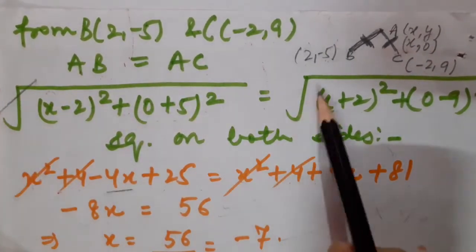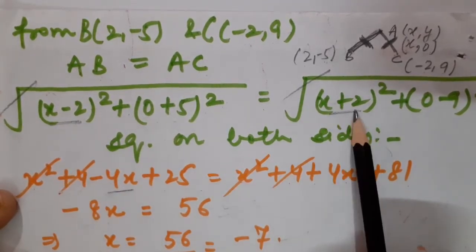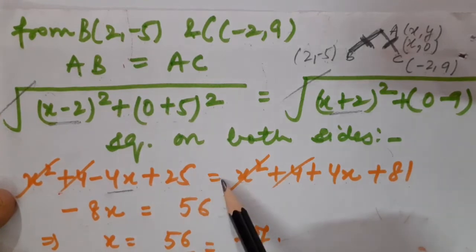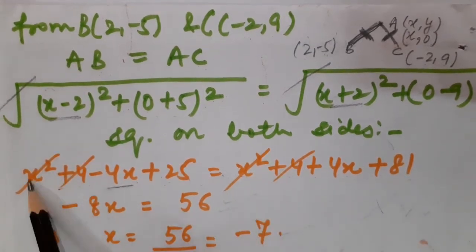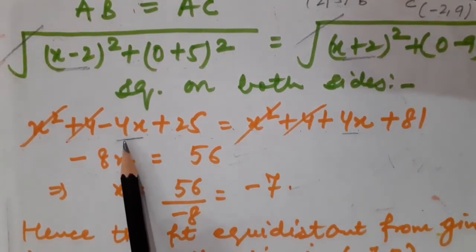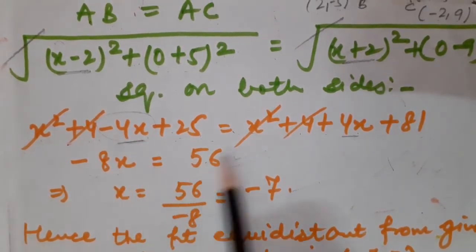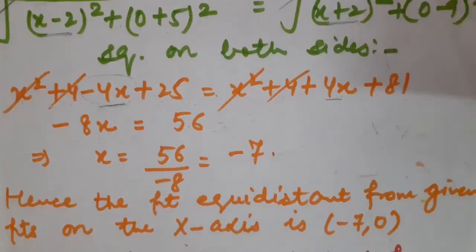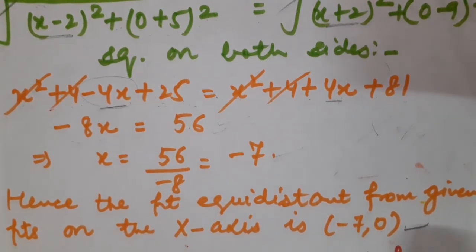Expanding: x²+4−4x+25 = x²+4+4x+81. The x² and 4 cancel. Bringing +4x to the left gives −4x − 4x = −8x, so −8x = 81−25 = 56. Therefore x = −7. Hence the point equidistant from the given points on the x-axis is (−7, 0).